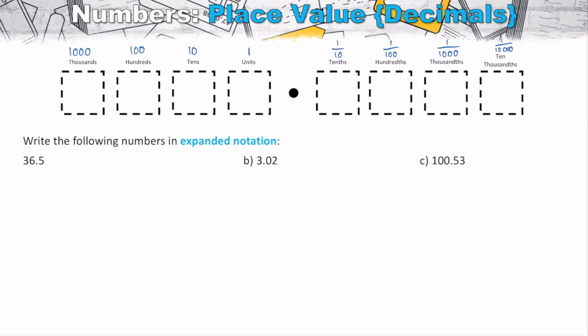So what we've actually got when we've got a number such as 36.5, we've got three tens, we've got six units, and we've got five tenths. So the way that we can think about this, initially it's the same sort of thing. We've got three tens, so this is 3 times 10. We've got six units, so we're adding 6 times 1. And we've got five tenths, so we're adding 5 times 1/10.